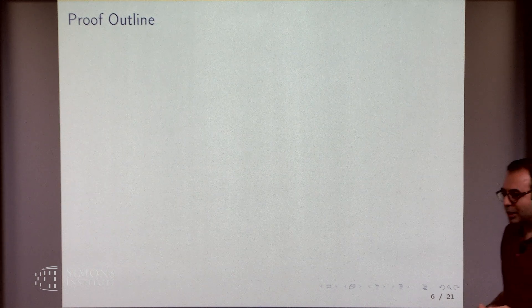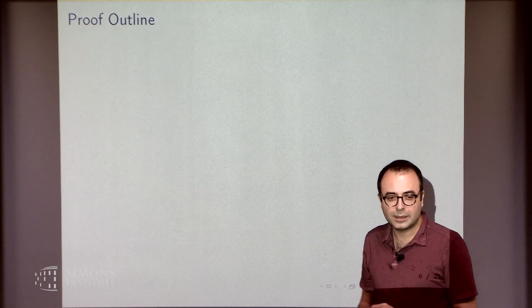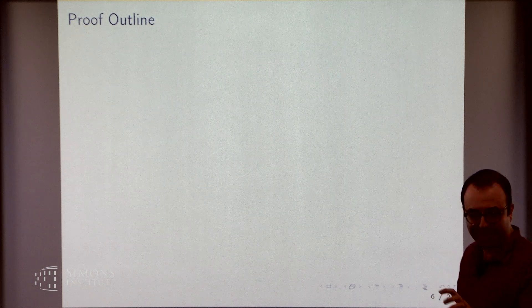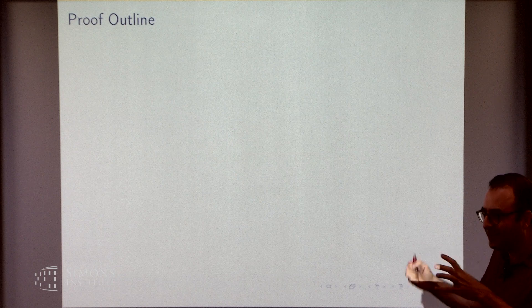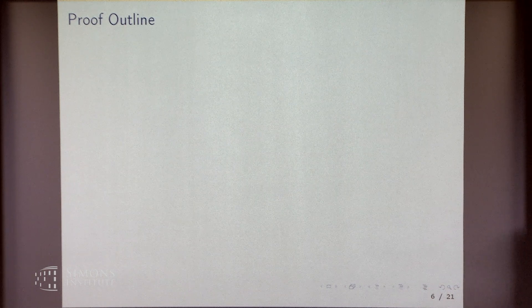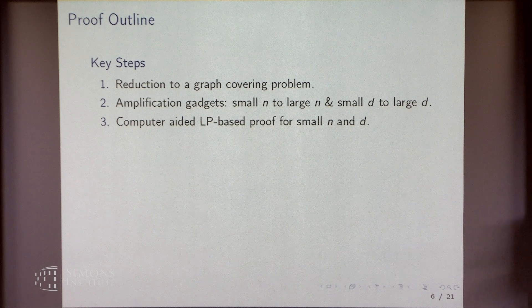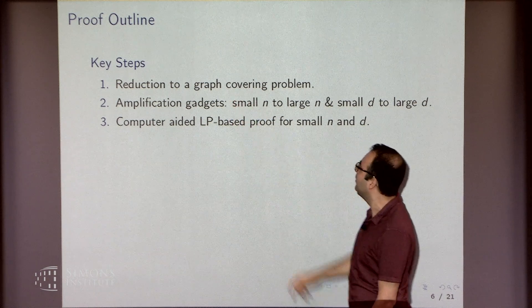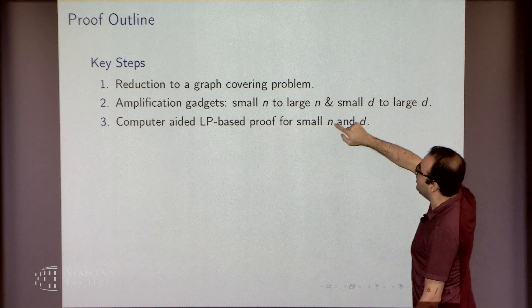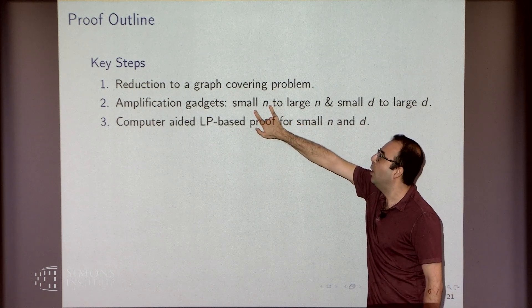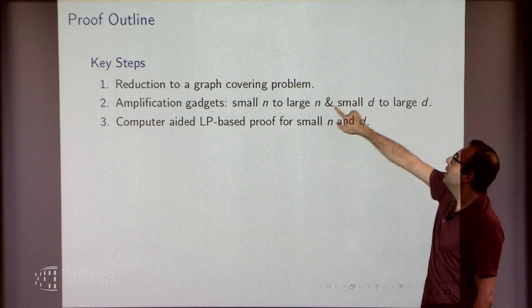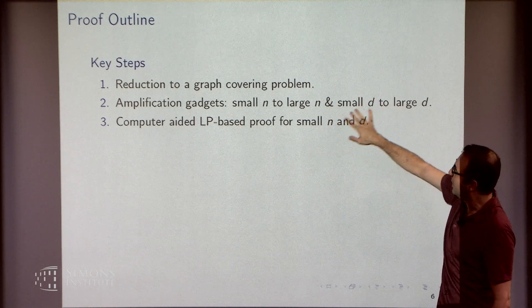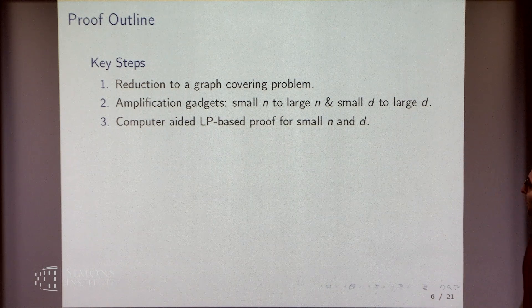In the next 10 minutes I'm going to give you the outline of the proof. The proof is not very difficult. It will have three steps: first, I'll reduce the competitive analysis to a graph covering problem; then I'll introduce two amplification gadgets showing you only need the analysis for small n and small d; and then, once we establish this, we use a computer — essentially a linear programming-based proof.